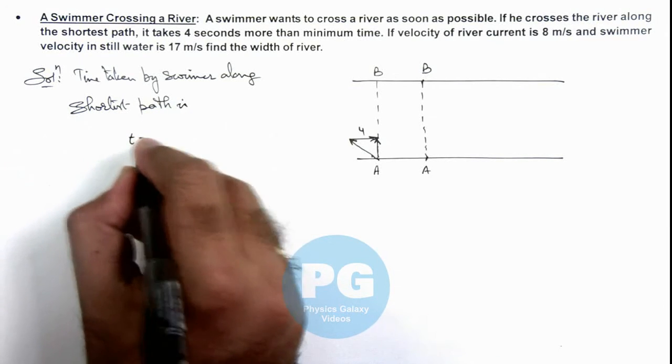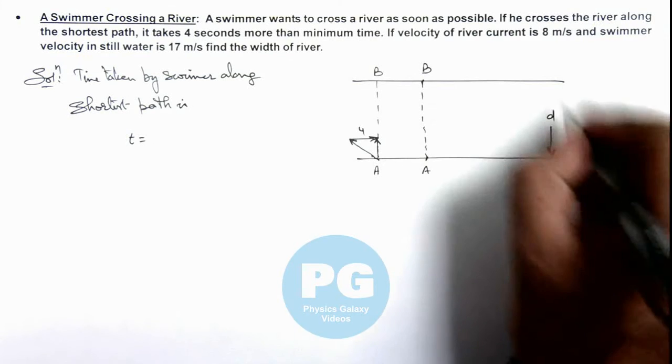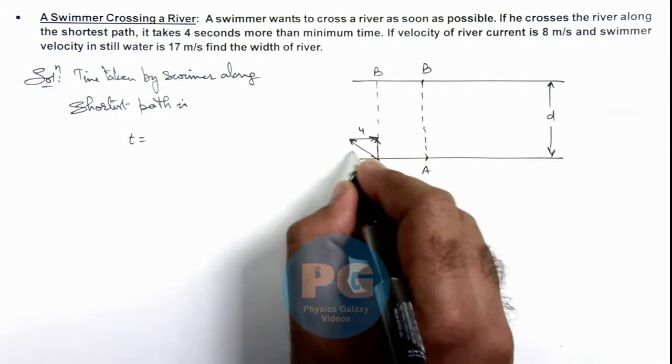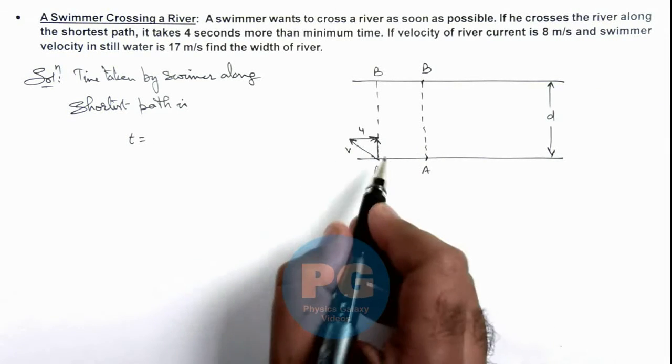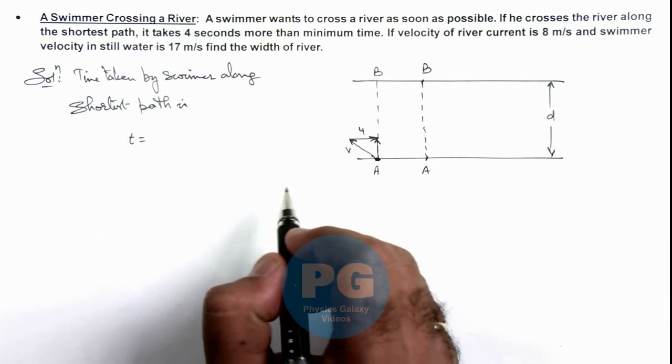This time we can write as: if river width we consider as d, and swimmer velocity with respect to water is v and river current is at speed u.